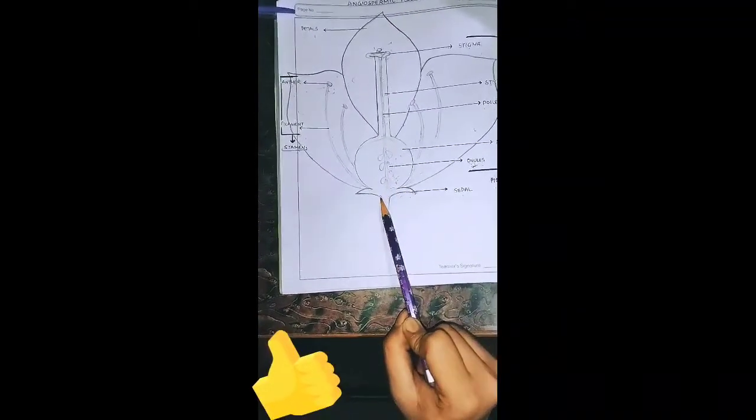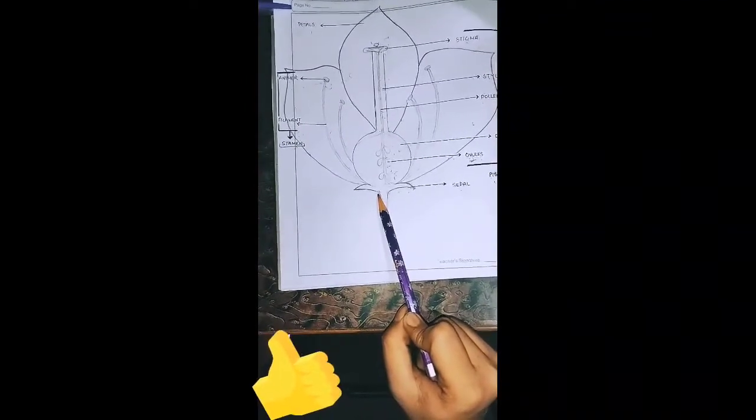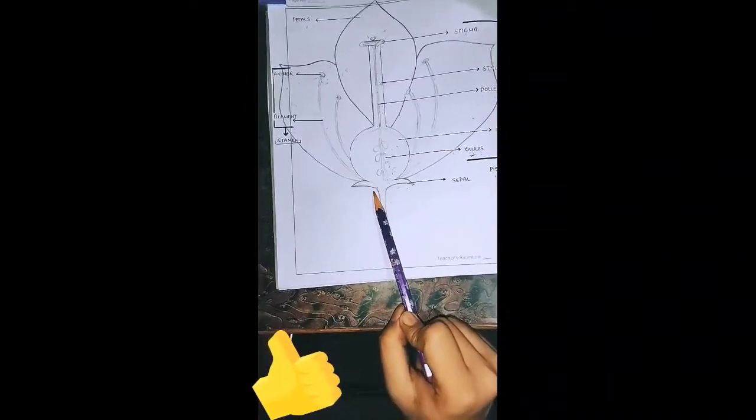Sepals are small leafy-like structures present just below the ovary and they are responsible for protecting the flower at the bud stage.